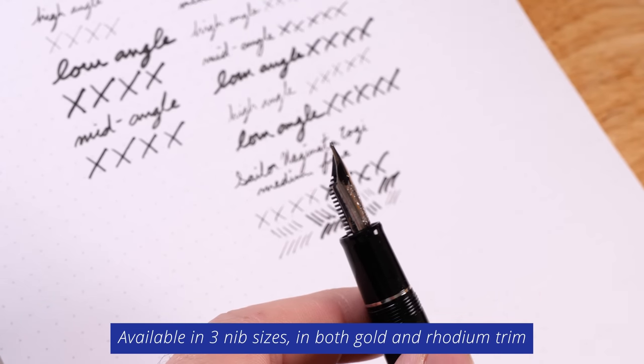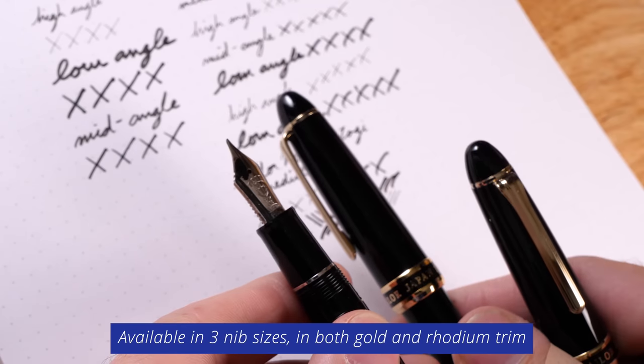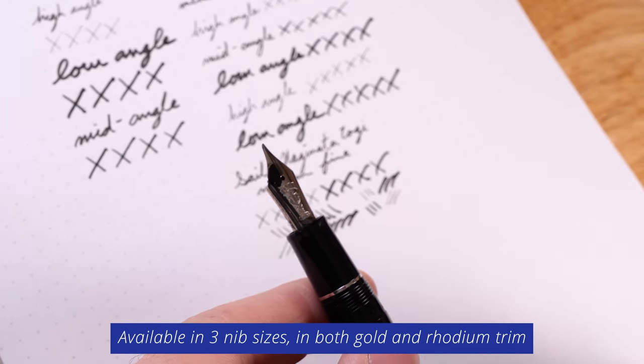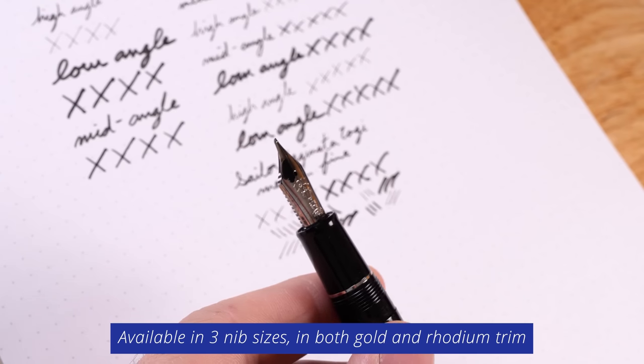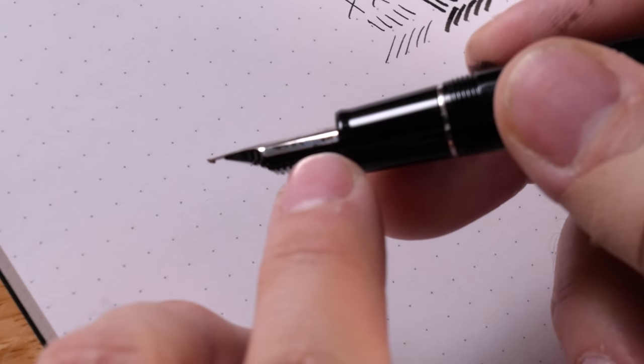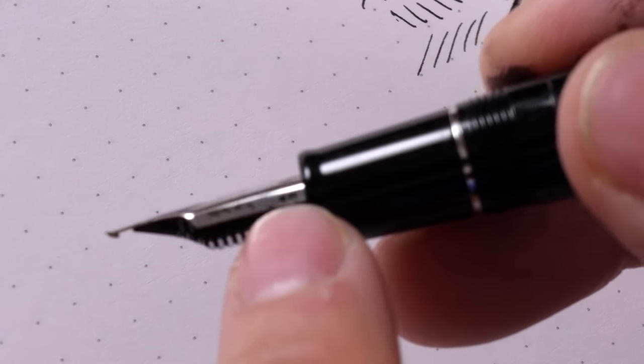There are three different nib sizes that I have for this: medium fine, medium, and a broad. And I thought I would go ahead and show you what they all look like when they write. This one I have here, this is the medium fine.